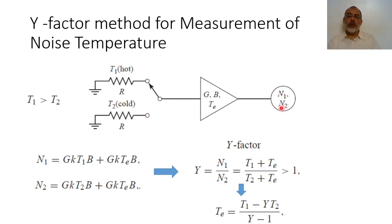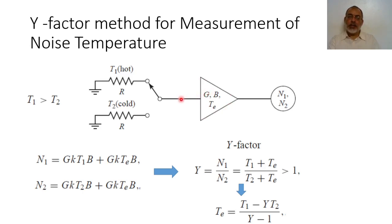Based on the definition of the effective noise temperature and the noise temperature of the input resistor, noise one equals the noise due to the first matched load at temperature T1 multiplied by the gain G, multiplied by K and the operating bandwidth B, plus the noise due to the internal source represented by an additional resistor with effective temperature Te. So N1 equals G·K·T1·B plus G·K·Te·B, where Te is the effective noise temperature of the amplifier.